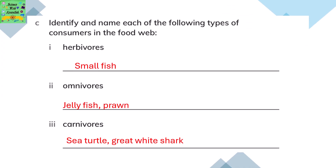Identify and name each of the following types of consumers in the food web. Herbivores are small fish. Omnivores are jellyfish or prawns. Carnivores are the sea turtle or great white shark.